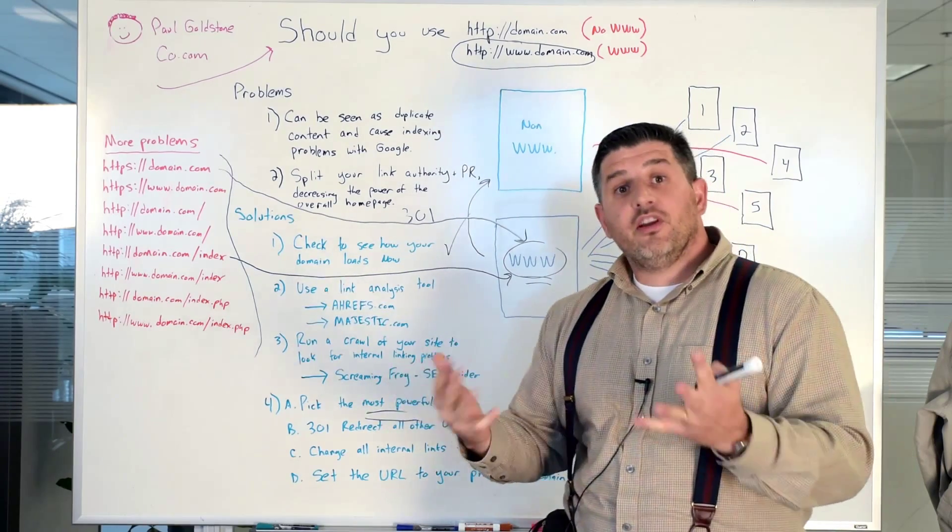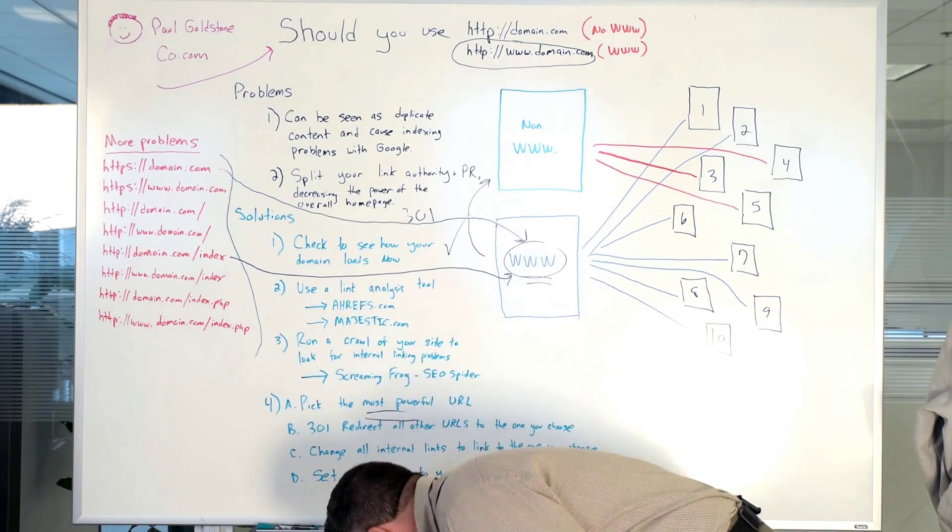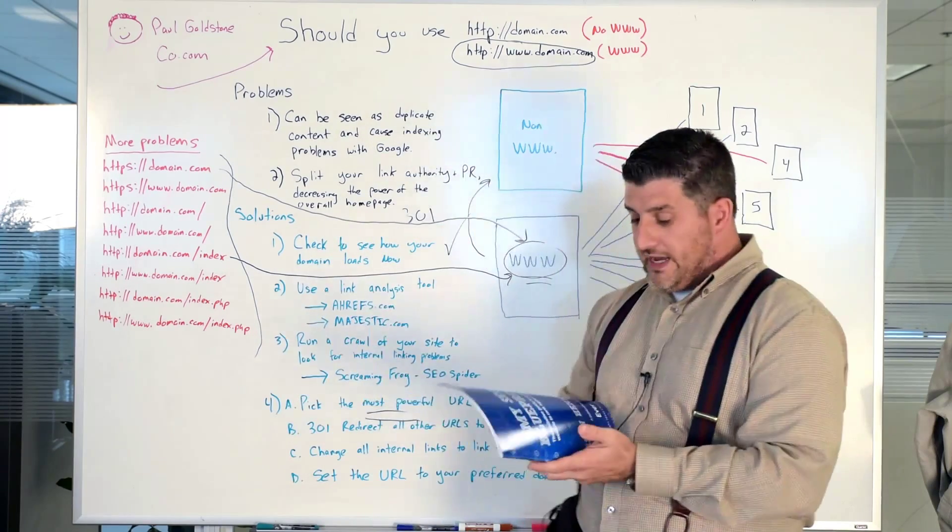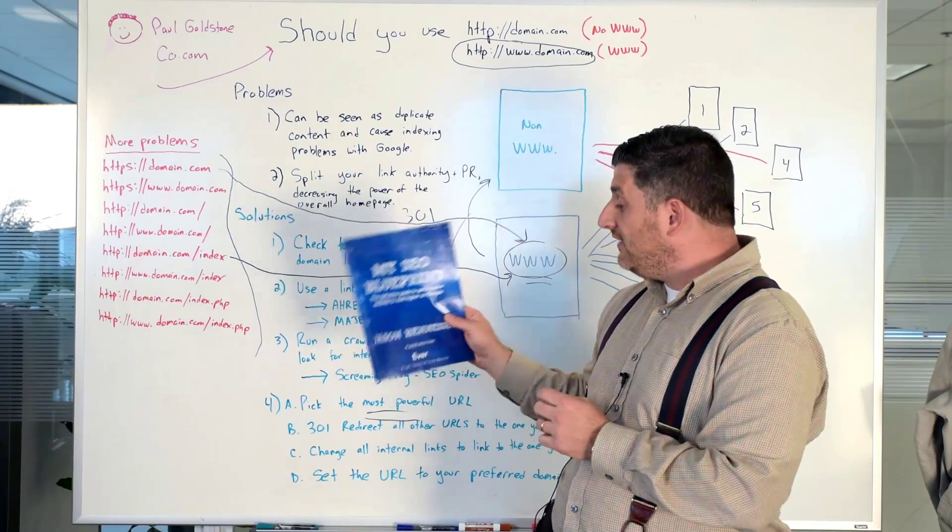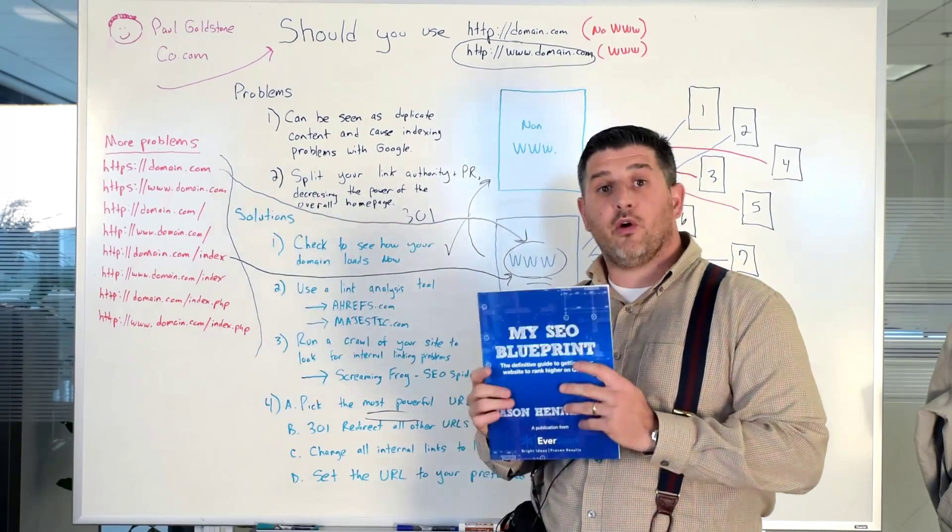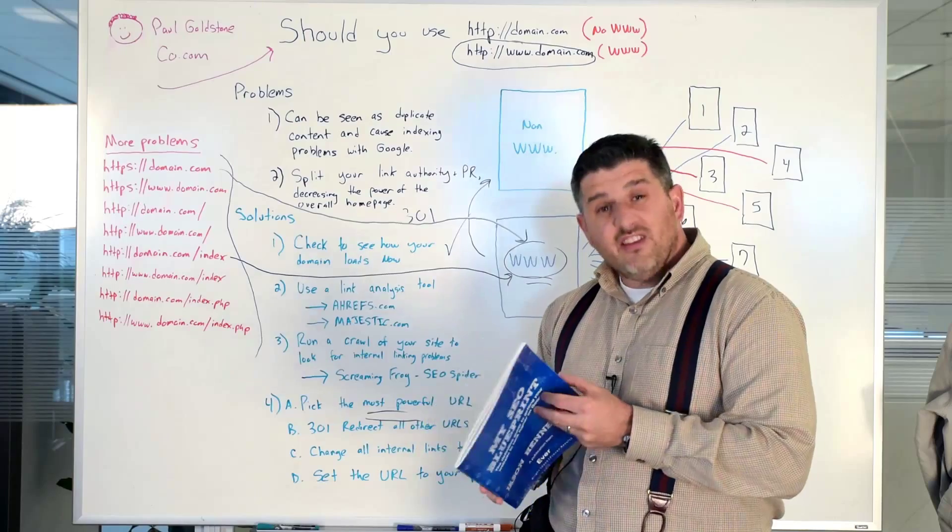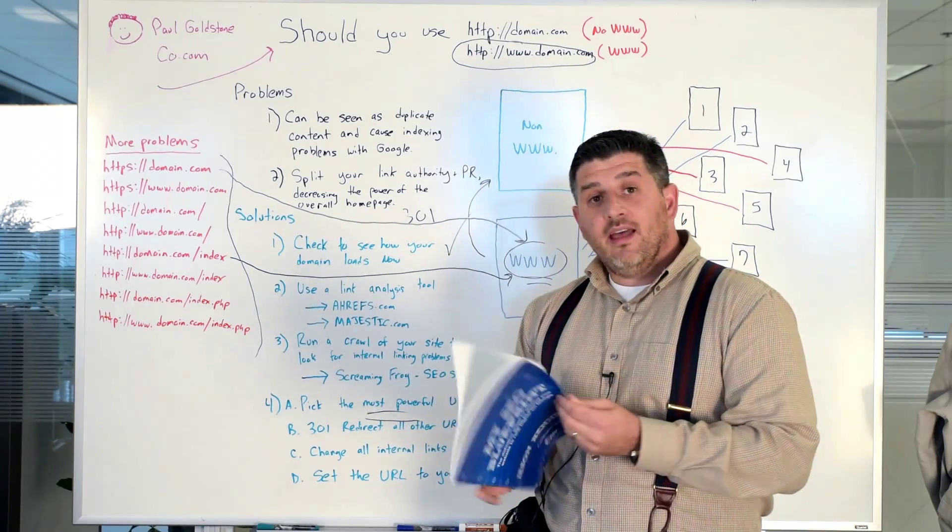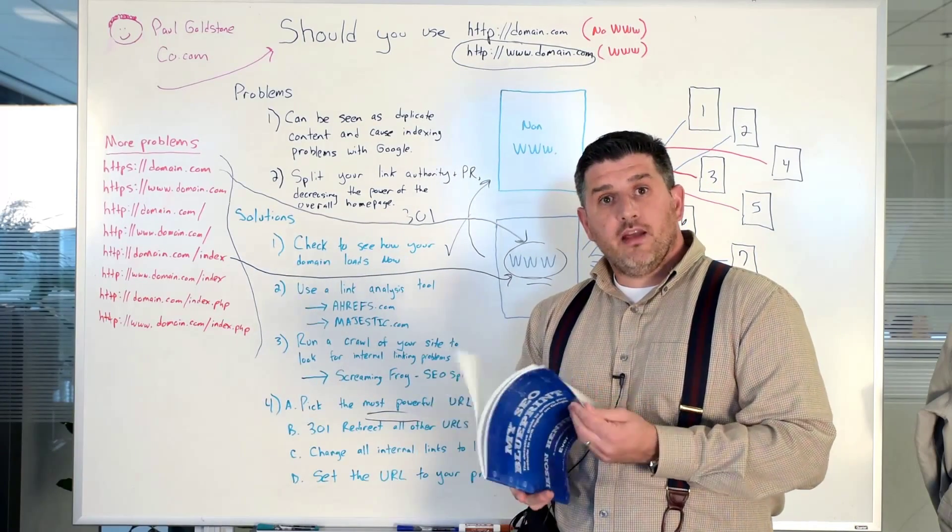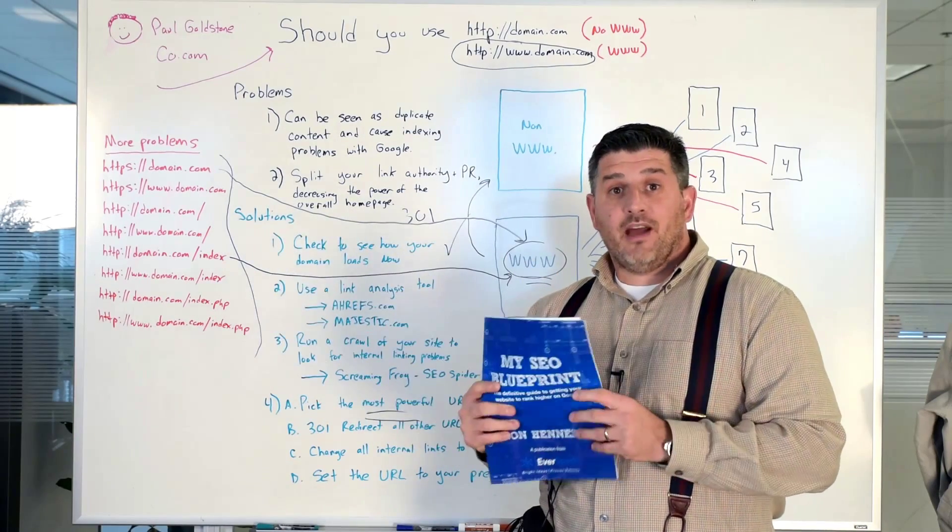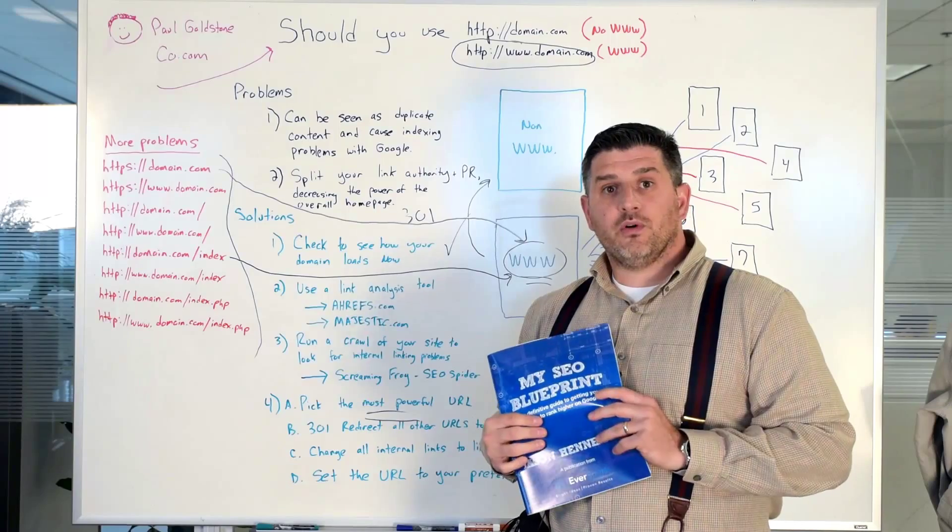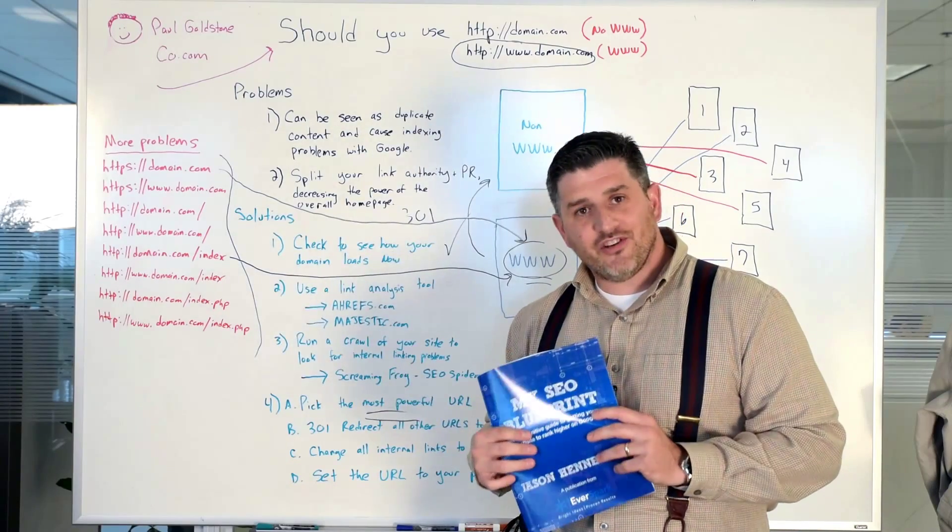All right I hope you find these videos informative. If you do we just published a book it's called My SEO Blueprint. It's the definitive guide to getting your website to rank higher on Google. There's over 50 tips in here just like this one and there's a banner right below the page here. If you want to get this it's absolutely free. All you got to do is click on the banner put your email in there and we'll get it to you right away. Thank you so much and happy Halloween.